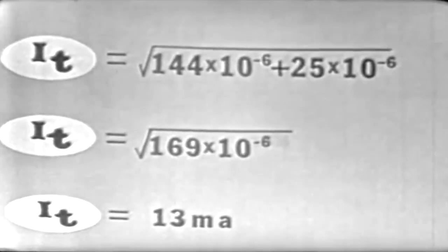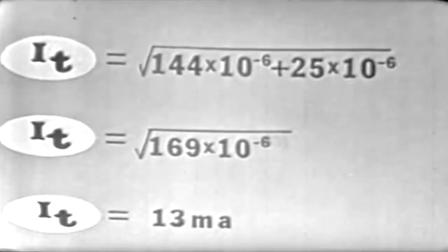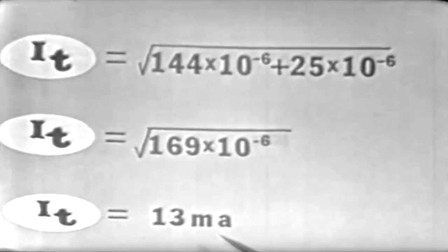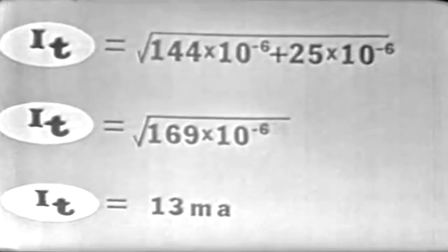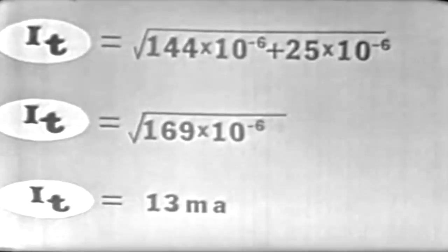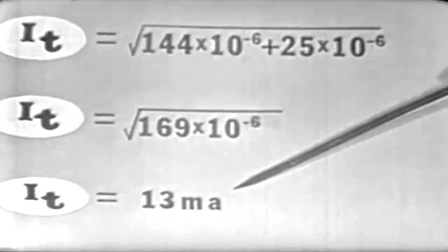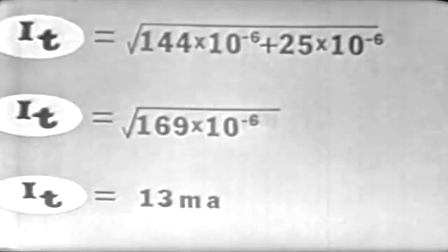Extracting the square root of 169 is 13. The square root of 10 to the negative 6 is 10 to the negative 3, which would be milli, and our current is in amperes. So, once again, we have determined our total current by using Pythagorean theorem. Our total current comes out to be 13 milliamperes.